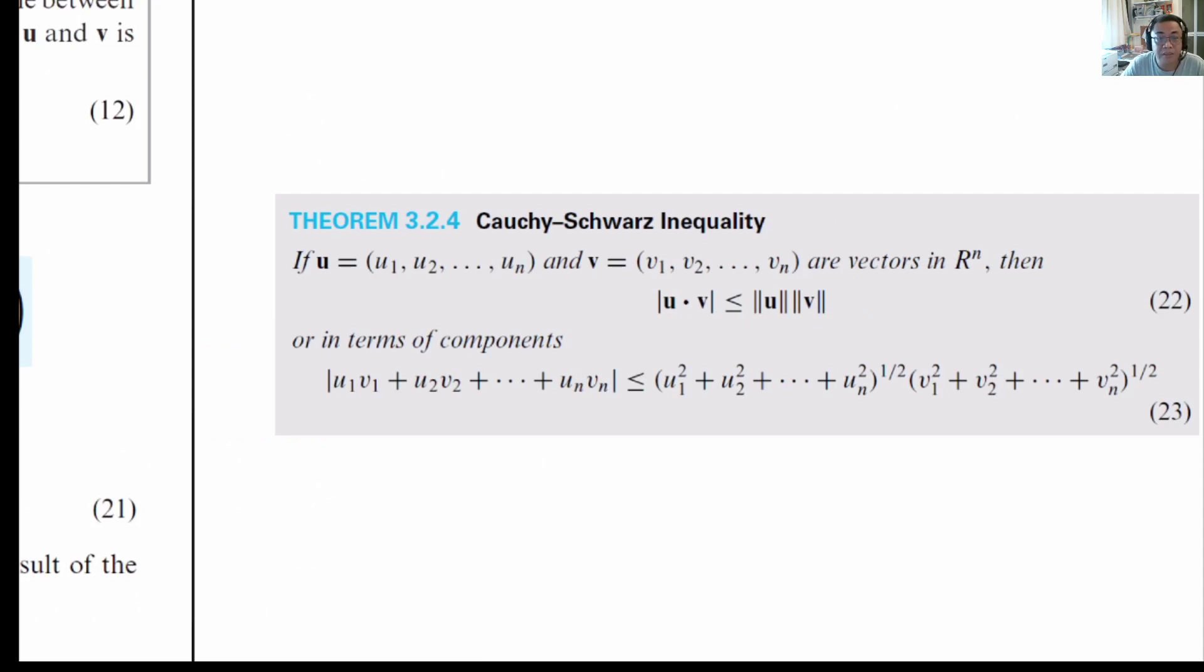Cauchy-Schwarz inequality is among the most famous of the inequalities that we will study. In its dot product form, it is this equation over here. It basically says that the dot product of u and v, the absolute value of this, is less than or equal to the norm of u multiplied by the norm of v.